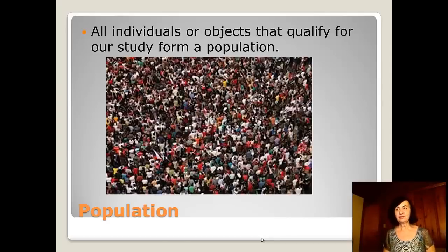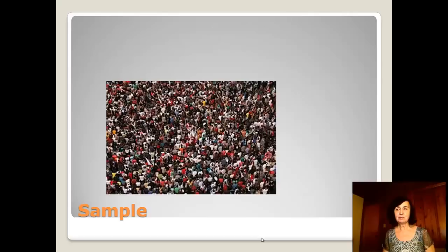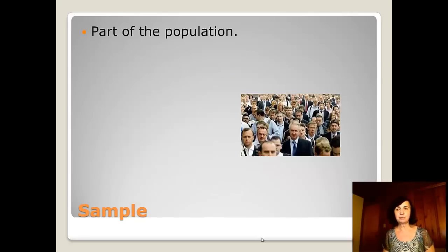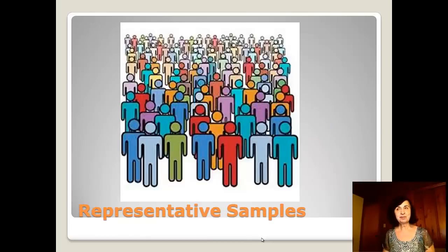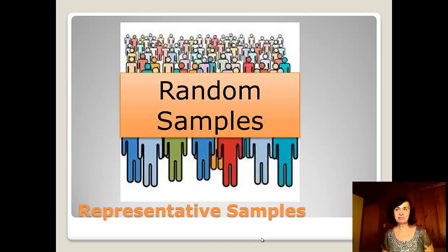You may think population means all people, but it's all people or objects that qualify for a particular study. Sometimes the population is too big, so we select part of it, called a sample. We study the sample, and if it's representative, we make inferences about the population.